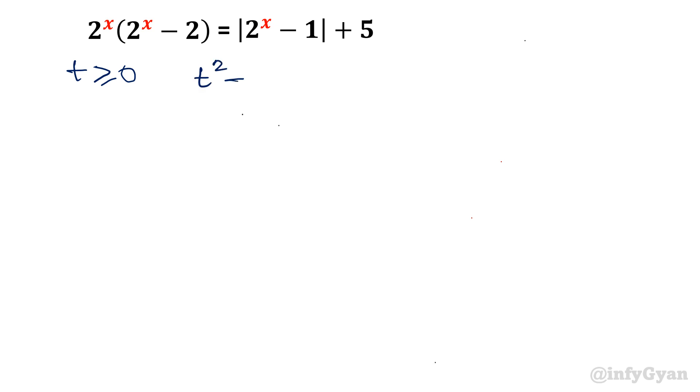For positive case t square minus t minus 6 is equal to 0. So t square minus t minus 6 is equal to 0. So a is 1, b is negative 1, c is negative 6.